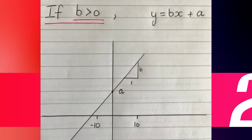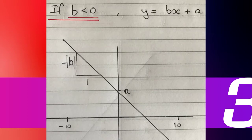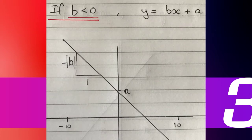Similarly, let's look at the case where b is less than zero. If b is a negative number we're going to have a gradient going down the page, still passing through the y-intercept at a — I've used magnitude signs to make clear that b is a negative value. So the maximum value of y occurs on the left-hand side with x equals minus 10, giving minus 10b plus a, and the minimum occurs when x equals 10, giving 10b plus a.